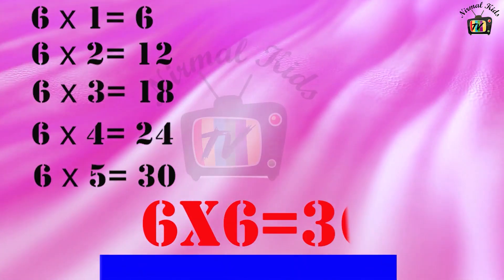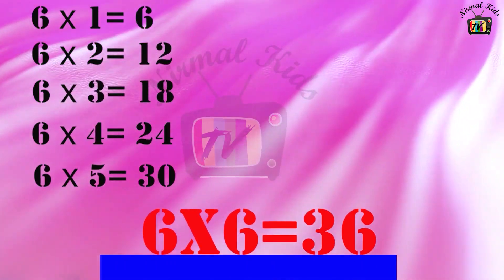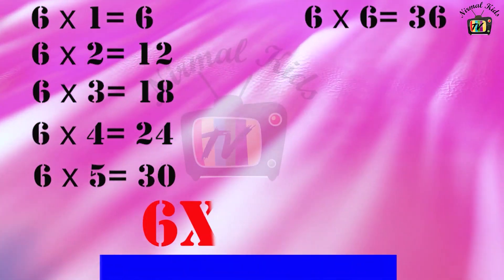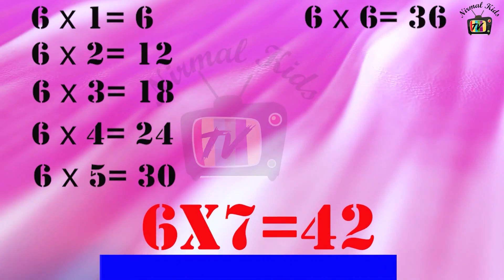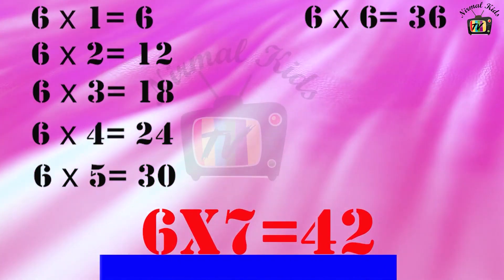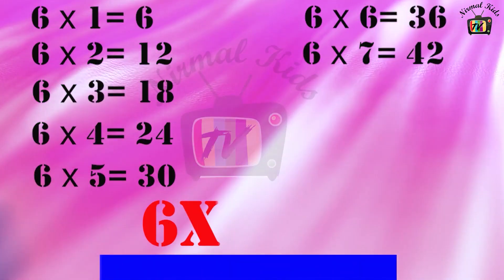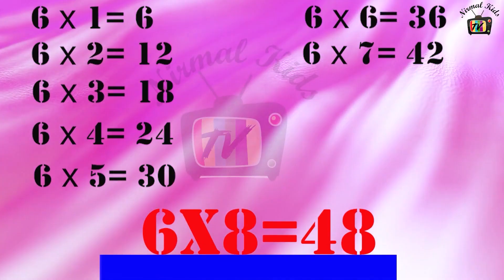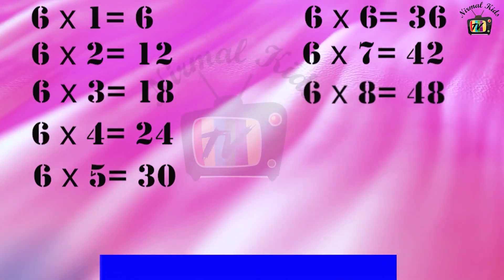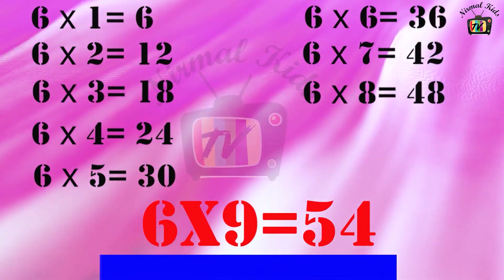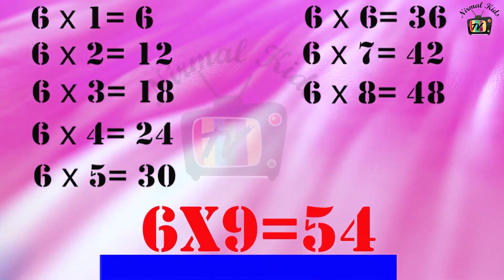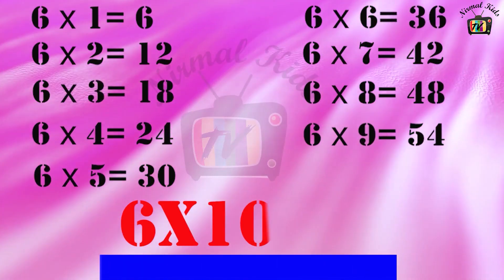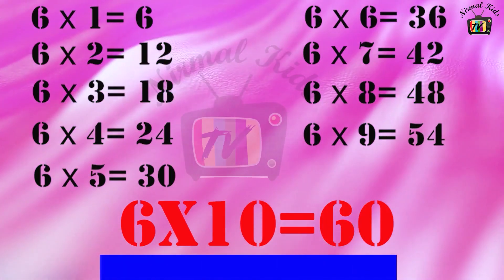6 6's are 36. 6 7's are 42. 6 8's are 48. 6 9's are 54. 6 10's are 60.